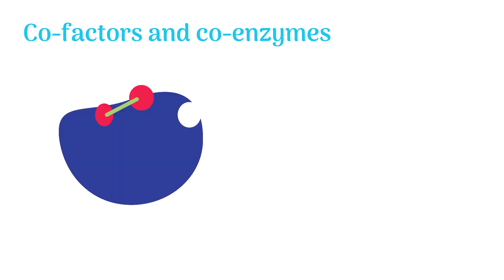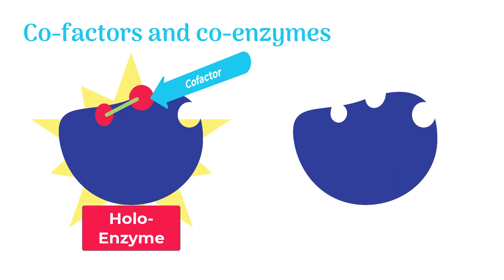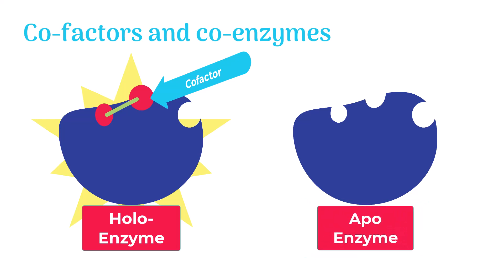The enzyme along with the cofactor bound to it in its active form is known as the holoenzyme. In contrast, the enzyme in its inactive form without the cofactor is called the apoenzyme.